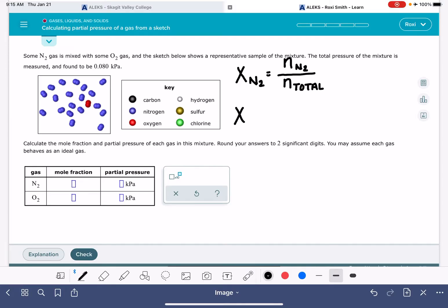For oxygen, the other gas in this problem, we can write a similar equation. The mole fraction of oxygen is the number of moles of oxygen gas divided by the total number of moles of all gases in the mixture. So that's a pretty simple equation to use.